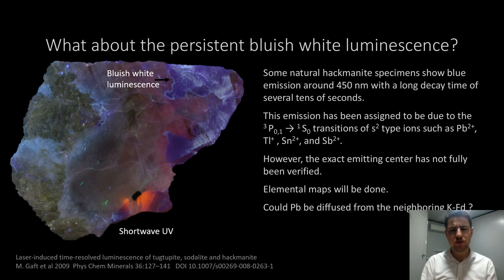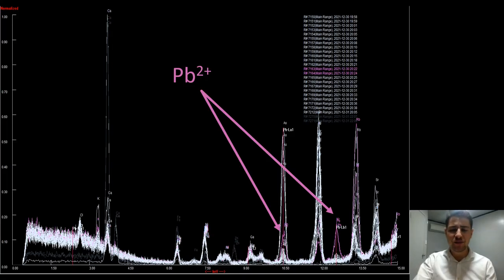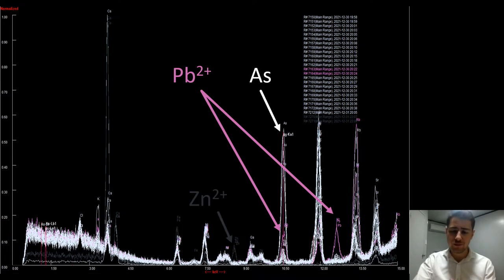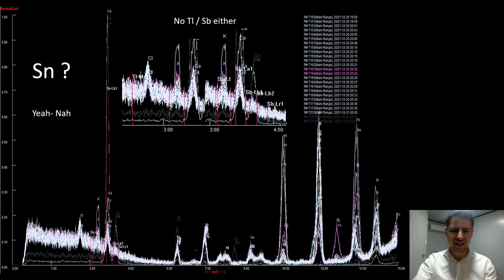What about the persistent bluish-white luminescence we can see when exposing the samples to short-wave UV? It lasts a few seconds and there are a few pieces of literature saying it's assigned to some orbital transition involving lead, thallium, tin and antimony. I've analyzed with XRF and even though lead is sometimes present, I can't really say it seems to be the main source of fluorescence.